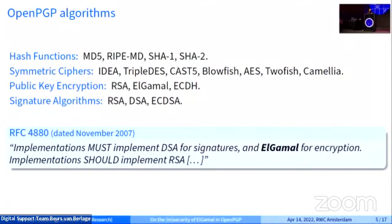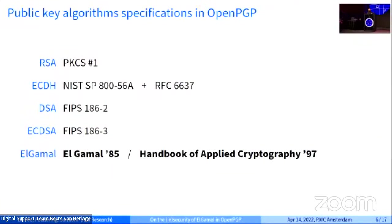Looking at the standard, until not long ago ElGamal was the only mandatory encryption algorithm, although it's definitely not the most popular — RSA is. The RFC doesn't really define these cryptographic algorithms; it just points to places where you find the definitions. For RSA it's the PKCS standard. For ElGamal, it turns out there is no ElGamal standard at all. The specification points to two places: ElGamal's original 1985 paper, and the Handbook of Applied Cryptography. Both say to take a large random prime P and a generator alpha of the multiplicative group. ElGamal doesn't say how to choose the prime; the handbook says to use algorithm 4.84.